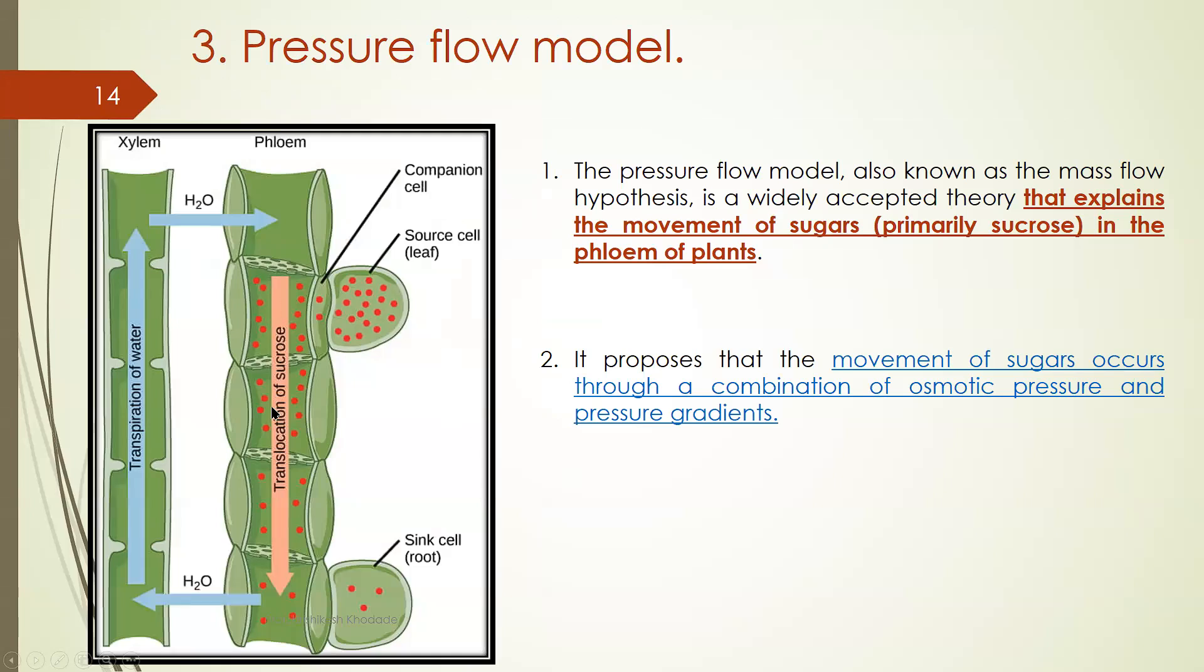So this is the diagram where you can notice that the central part is the sieve tube element portion. So companion cells are located near to the sieve tube element. This is the leaf region. From leaf to the sieve tube element food material are transported through the companion cell. You have to remember this.